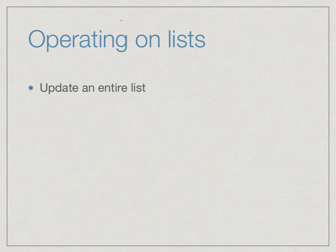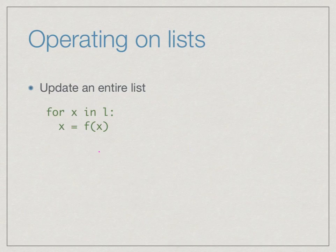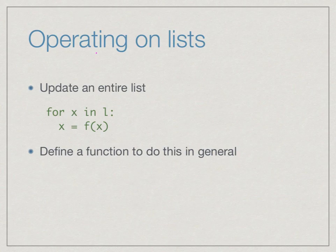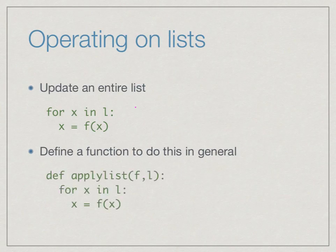Quite often we want to do something to an entire list. For instance, we might want to replace every item in the list by some derived value f of x. So we would write a loop: for every x in it, replace x by f of x. We could write a function to do this for different lists and different values of f — define apply_list, which takes a function f and the list l, and for every x in l it replaces x by f of x. Since l is a mutable item, this will update lists in the calling function as well.